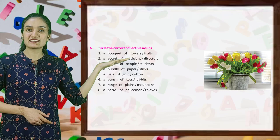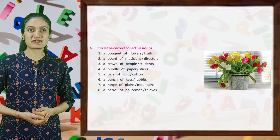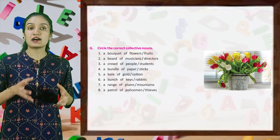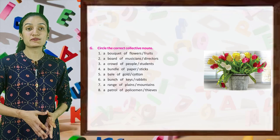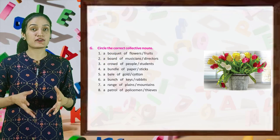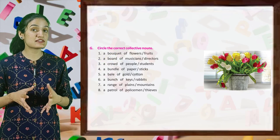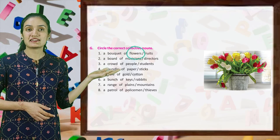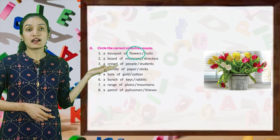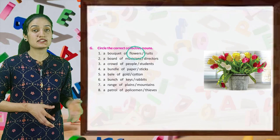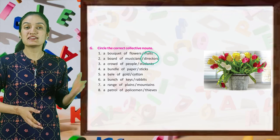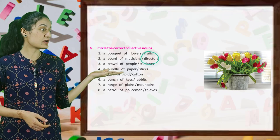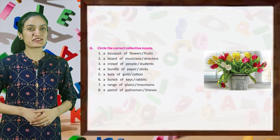Now, circle the correct collective nouns. First: a bouquet of flowers or fruits — so the collective noun here is flowers, and you will circle flowers. Second: a board of musicians or directors — so you will circle directors. In the same way, circle all the correct collective nouns.